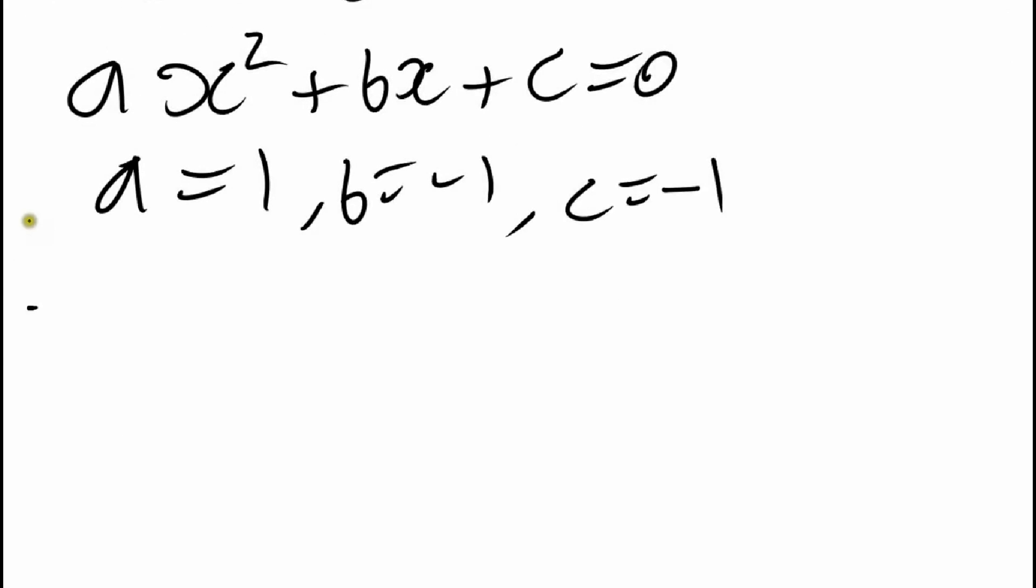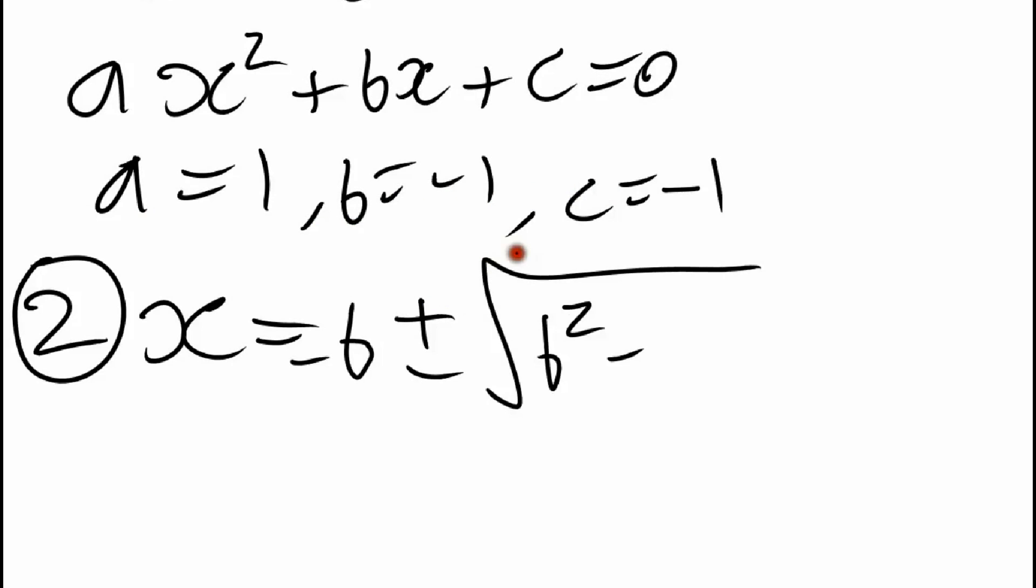So now stage 2, we just use our quadratic formula. So here's the x is equal to minus B plus or minus the square root of B squared minus 4AC all over 2A. Now we just chuck our numbers in.